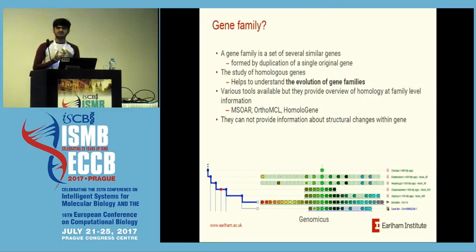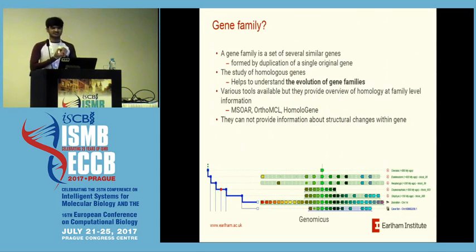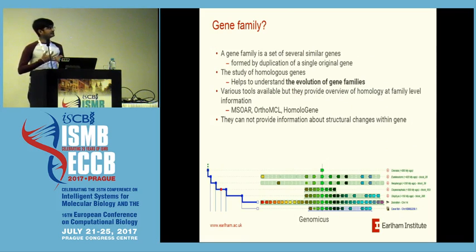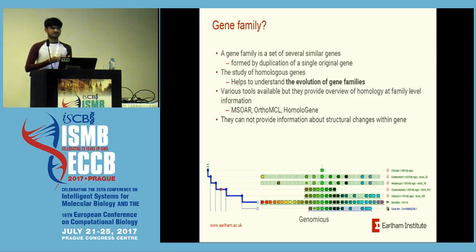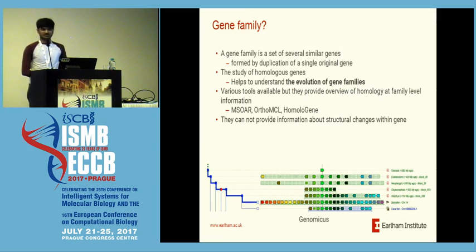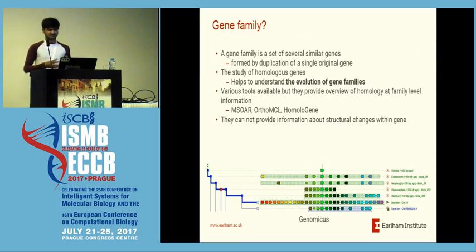Why gene families? Gene families are a set of similar genes. They are formed by a duplication event from a single gene. Why do you want to study gene families? These gene families help us to understand the evolution of the gene family — how gene families have evolved in different species. There are many tools available to find information about gene families, like MSOR, OrthoMCL, and Homologene. But they cannot provide detailed internal information; they just provide an overview of the gene family — how they look and which genes are similar.